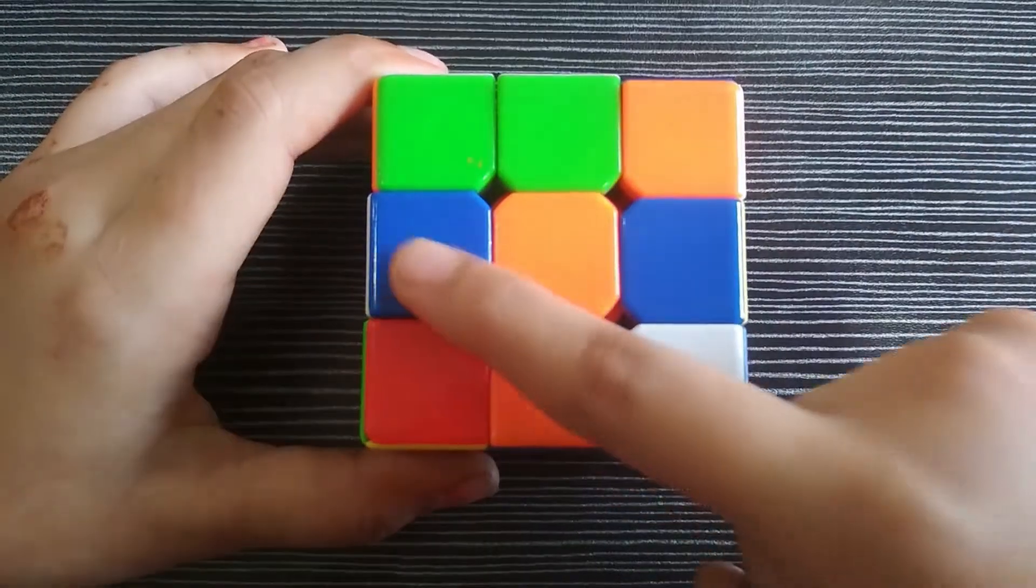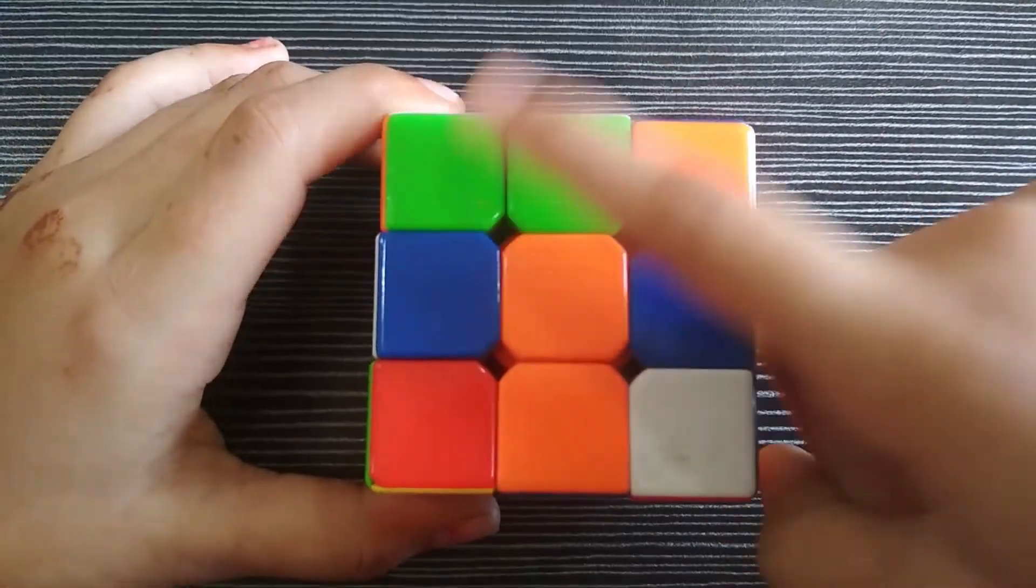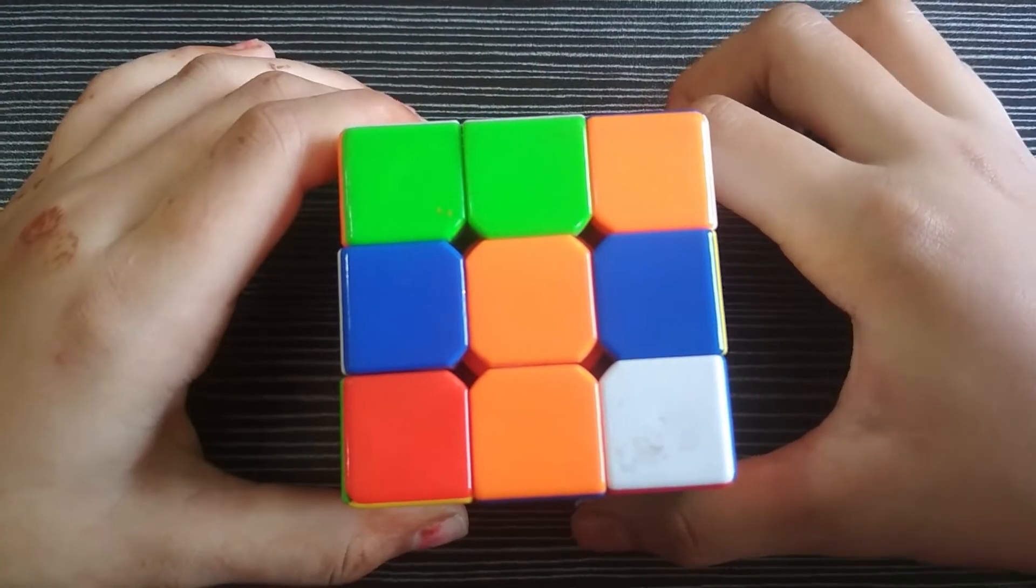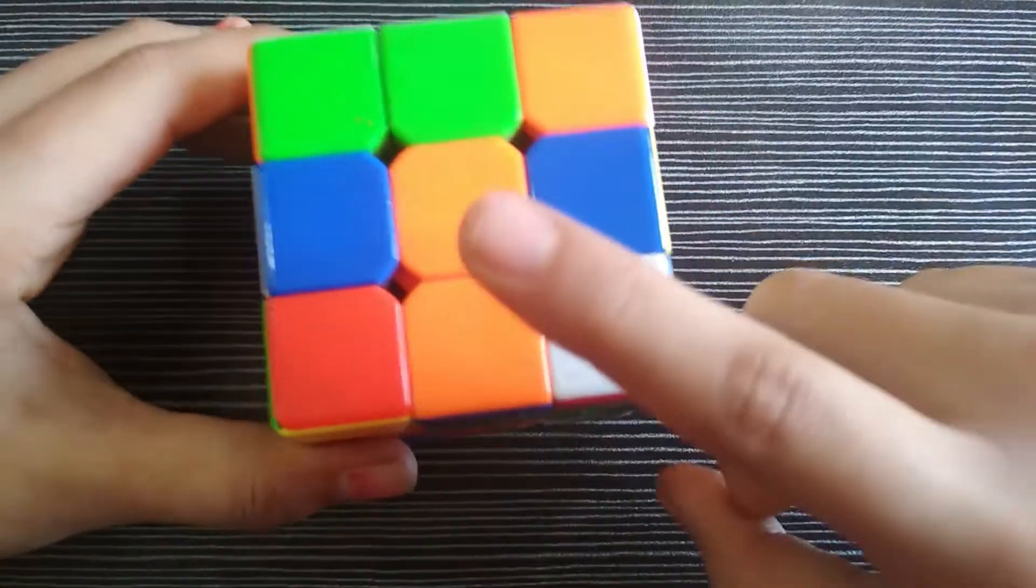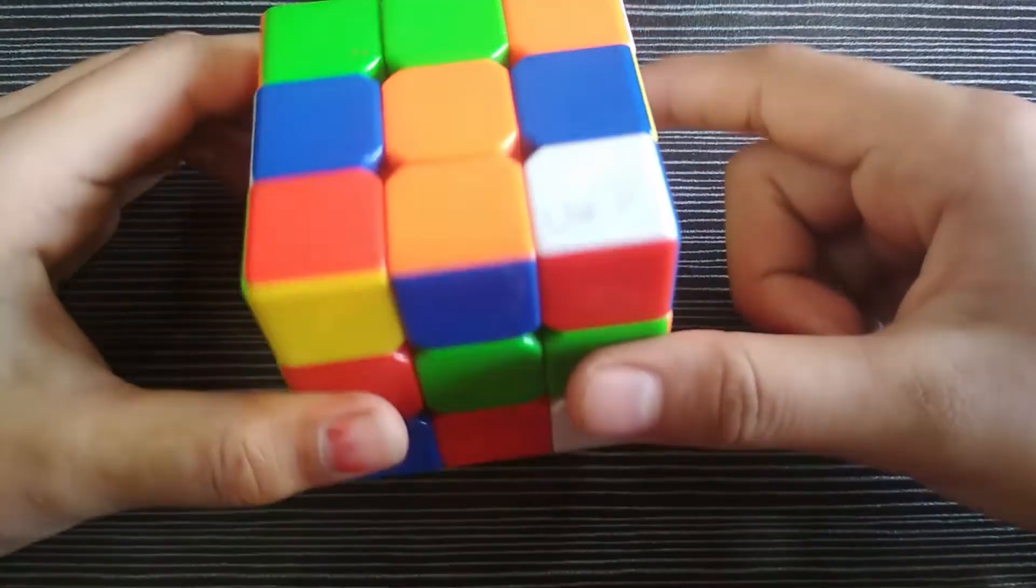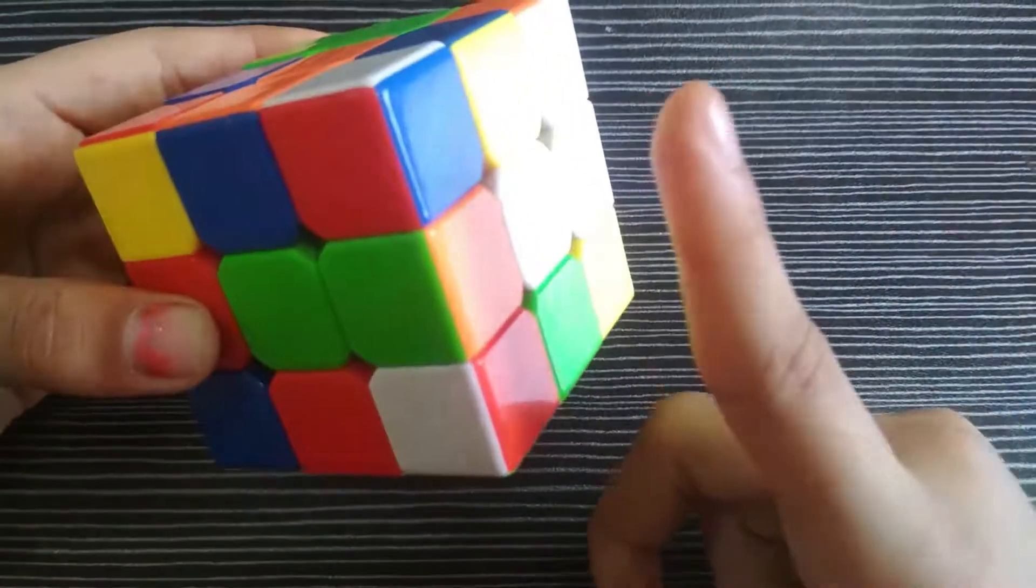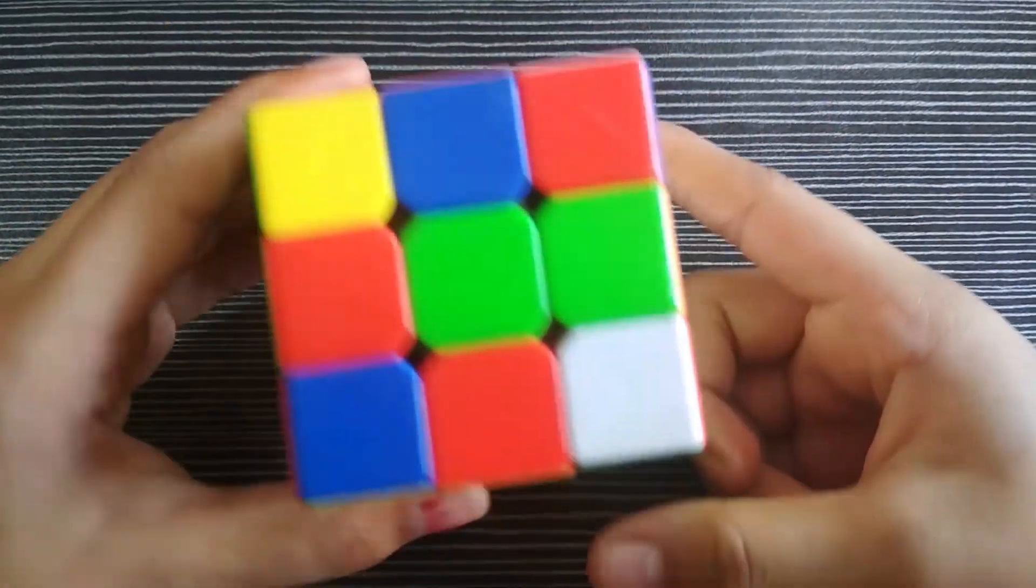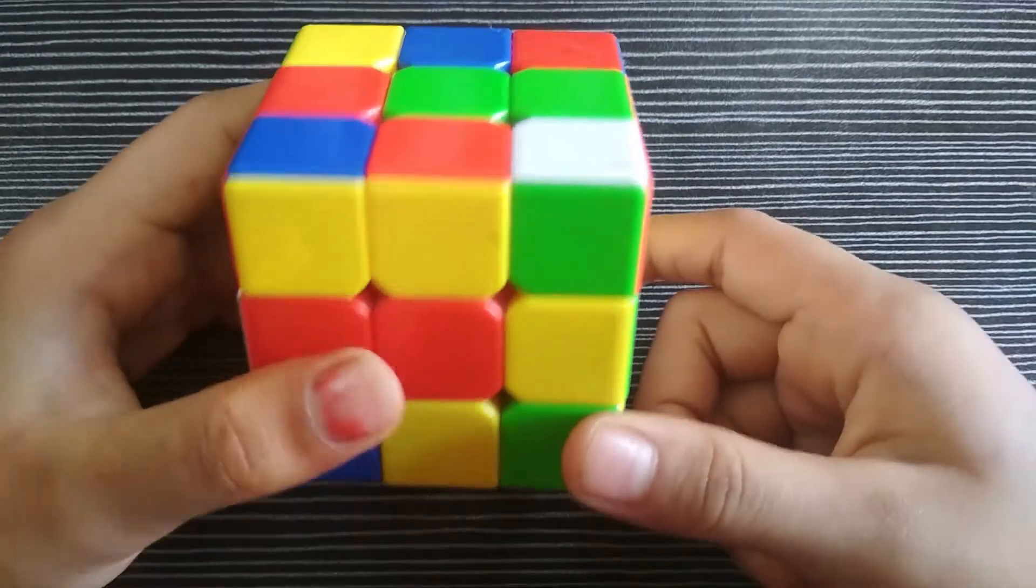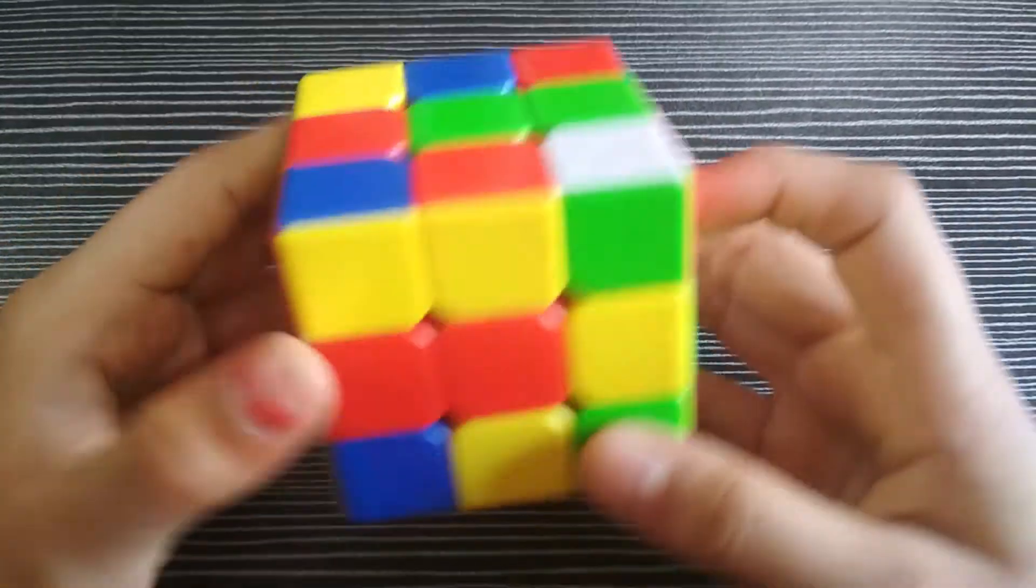So edges, center, and corners. Now in a Rubik's cube, there is top, bottom, left, and right. So this is the top one, bottom, right, and left. If you are holding like this, it will be top, bottom, right, and left.